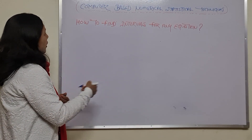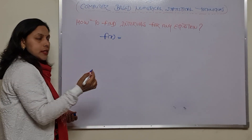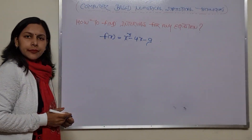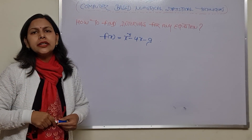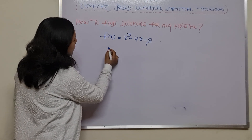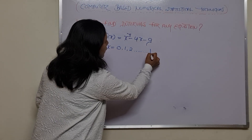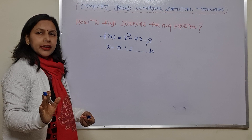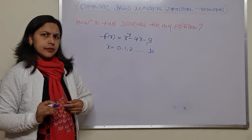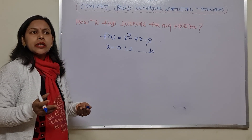For example, let us suppose we have the equation f(x) = x³ - 4x - 9. We need to find the intervals within the range x = 0 to 10, determining where the approximate root lies — whether between 2 and 3, or between 0 and 1, and so on.